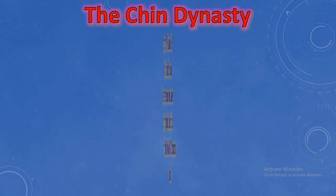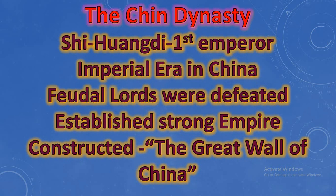The ruler and founder of the Qin Dynasty is Shi Huangdi. He was the first emperor. He has been given the title 'Son of Heaven.' That's why Shi Huangdi is also called the Son of Heaven. His period is known as the Imperial Era in China.